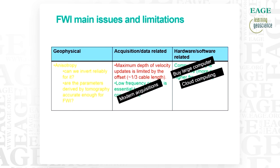The real showstopper at the moment is the maximum depth of investigation of FWI, limited to the cable depth. There are two solutions to that. The first: we acquire longer offsets, but this has a cost implication. The second: we start thinking about using FWI with reflection data, where the reflection data not only updates the short wavelength of the velocity field but also the long wavelength.